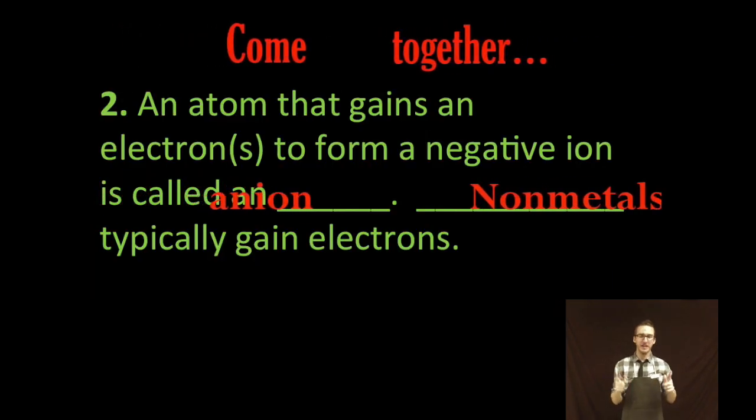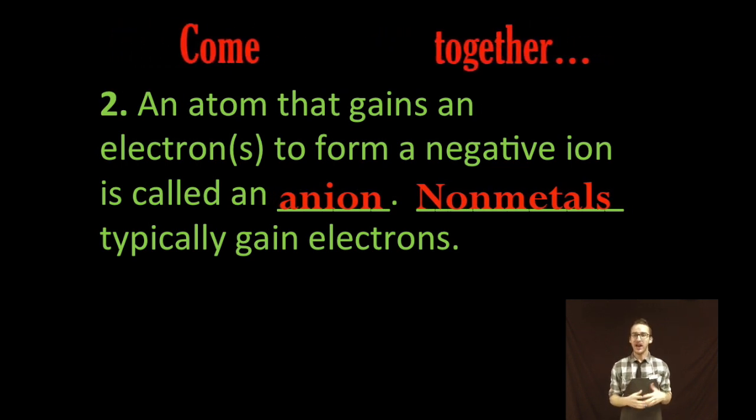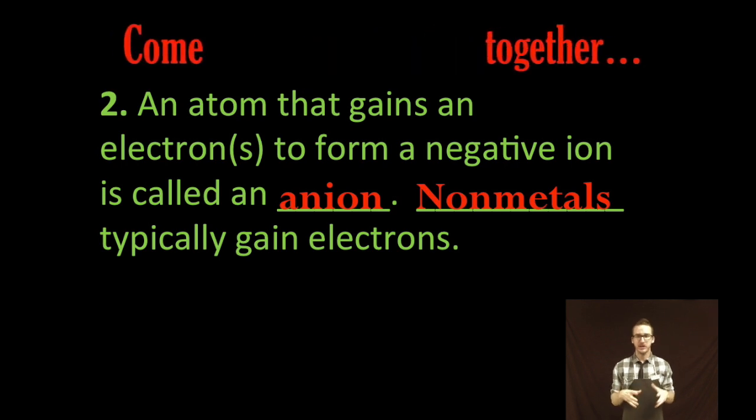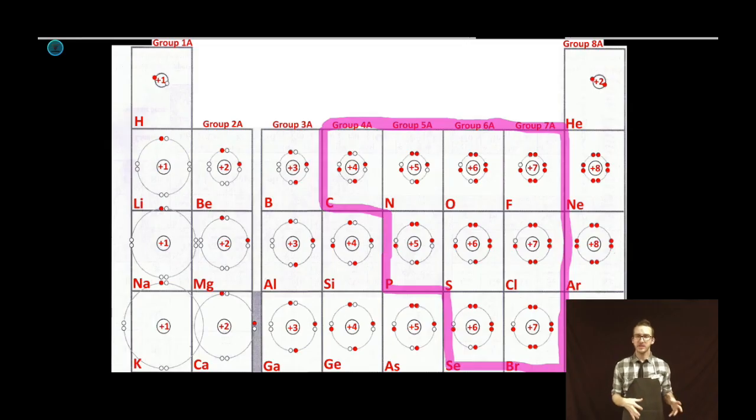A second important vocabulary word, anion. These are atoms that gain electrons to form negative ions, and typically it's your non-metals that will gain electrons. Again as you come back to the CVR model of the periodic table, recognize that your non-metals will generally gain electrons because they have relatively high or attractive effective core charges.